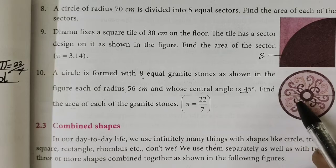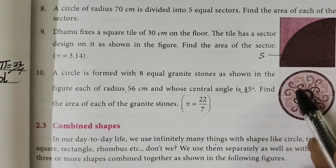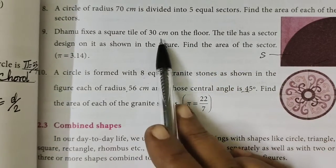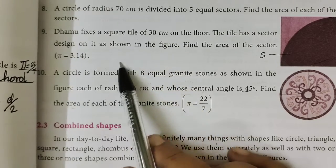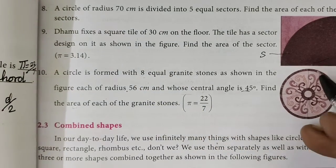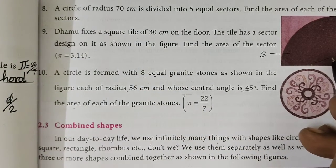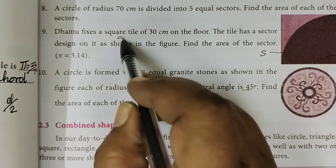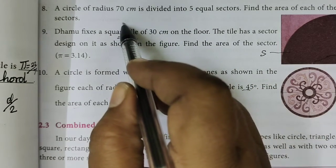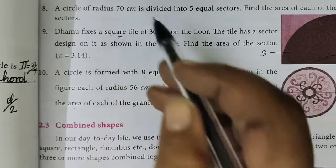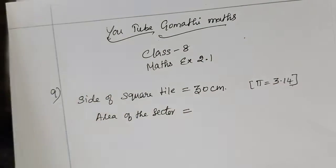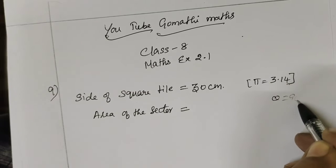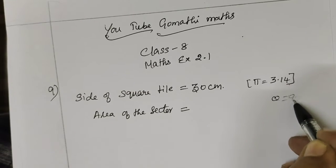So first we do the first sum. Radius is 30cm. The angle is 90 degrees, because the square tile corner is 90 degrees. So the angle theta is 90 degrees.